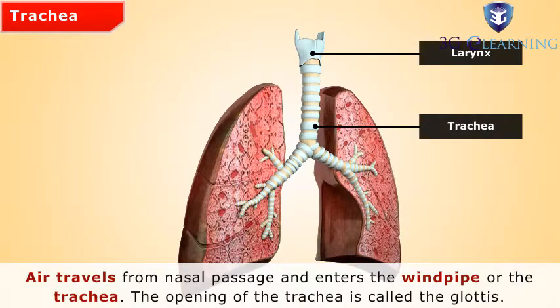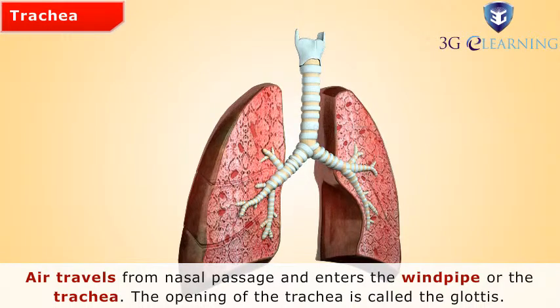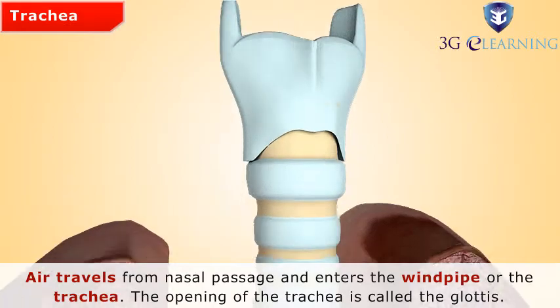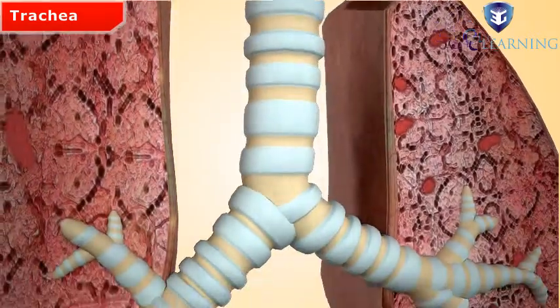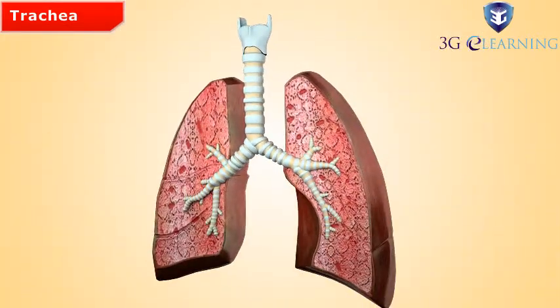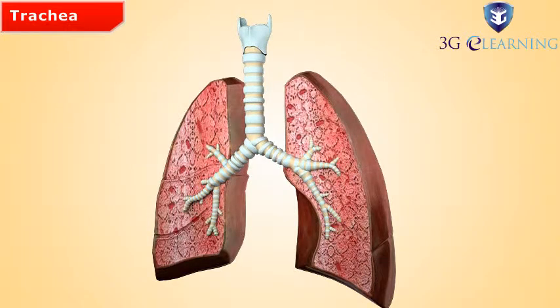Trachea. Air travels from the nasal passage and enters the windpipe or the trachea. The opening of the trachea is called the glottis. The windpipe and foodpipe are placed very close together. When the windpipe is to be closed and food is passing through the foodpipe, the epiglottis, or the covering of the glottis, covers it for protection. If food accidentally enters the windpipe, we experience bouts of coughing.